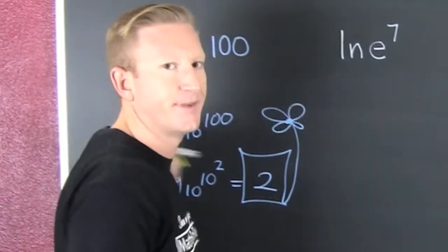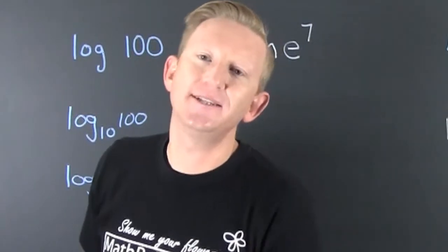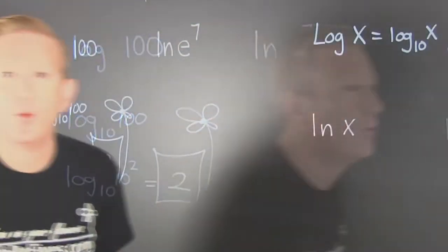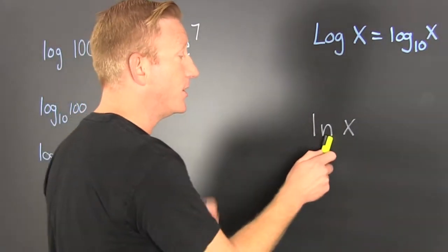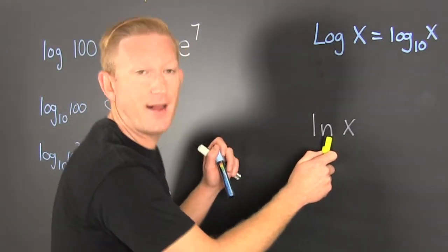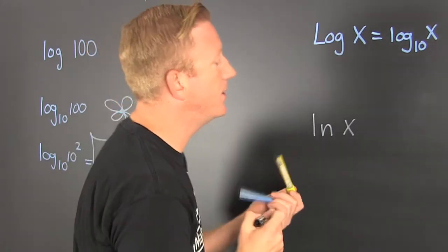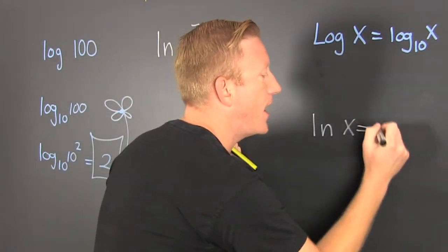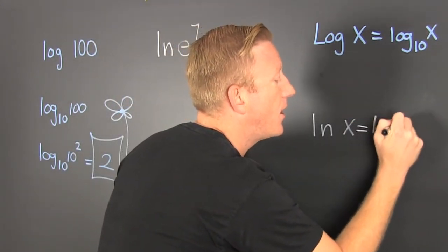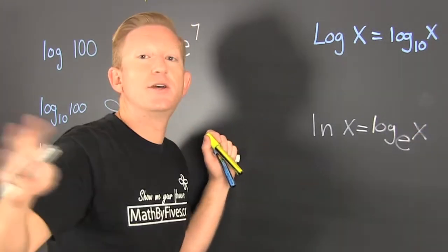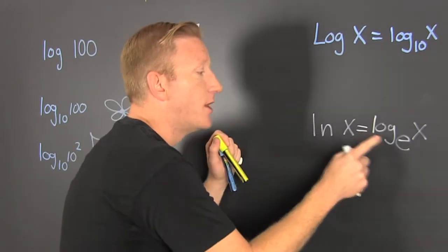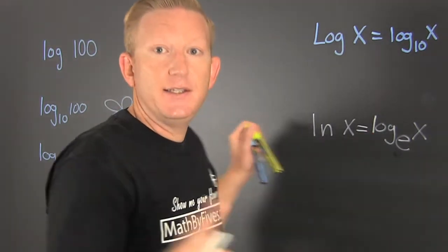Naturally, I want to take a look at the natural log, one that happens so much in nature it gets its own log. The natural log. If we take a look at the log natural, we're looking at the log base e of x. So the natural log is a logarithm base e.